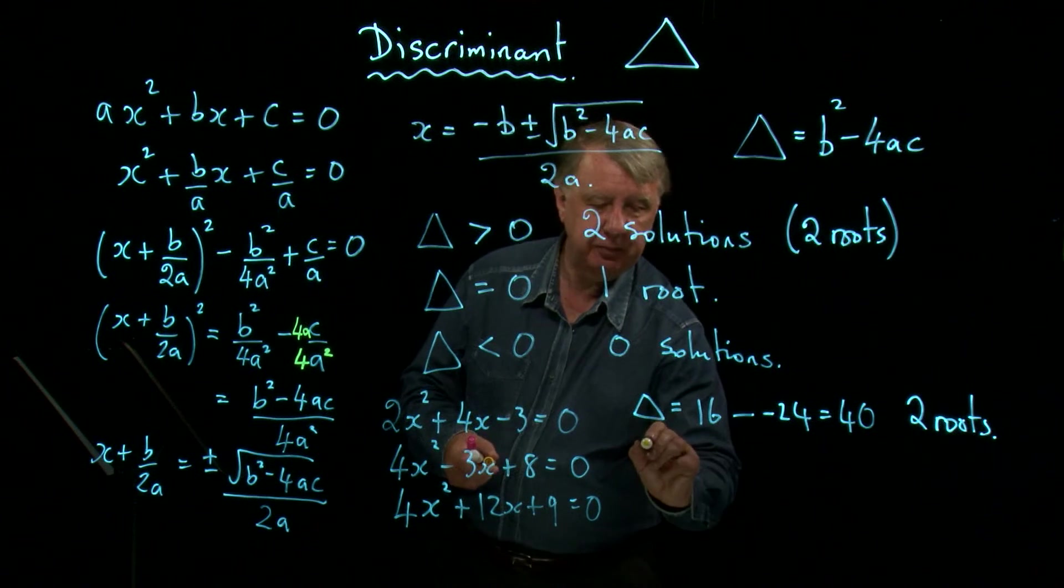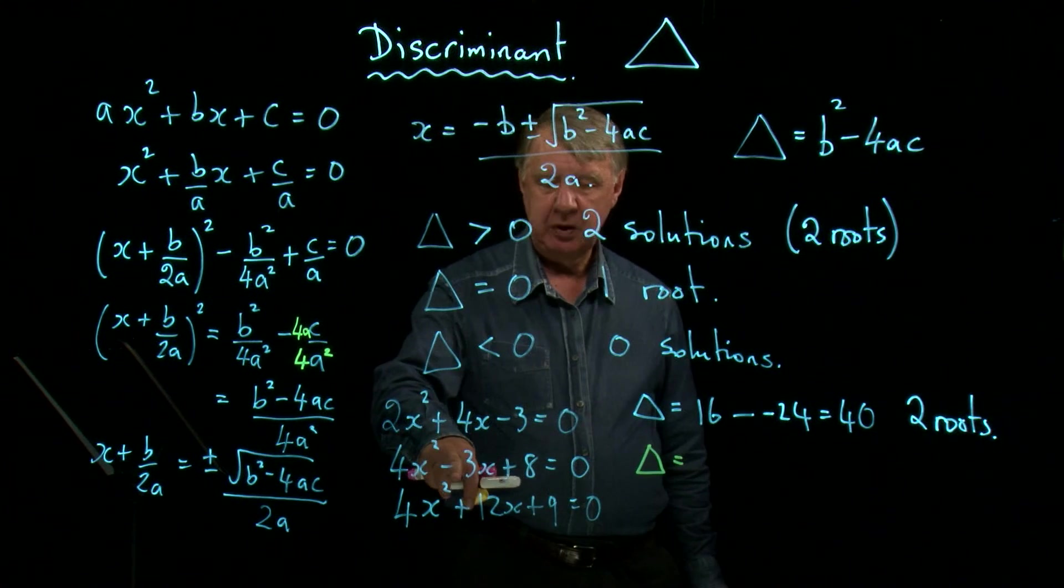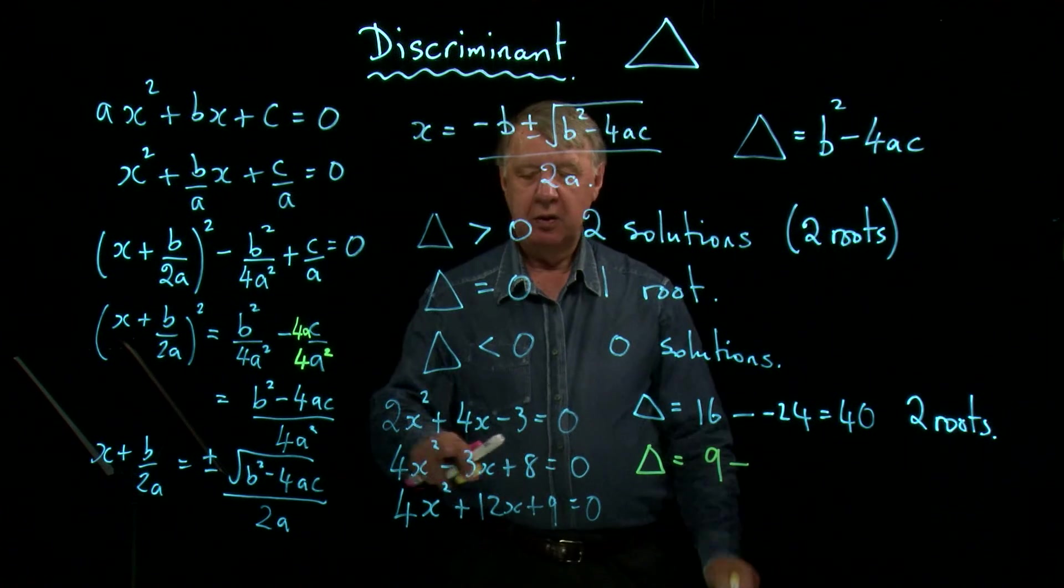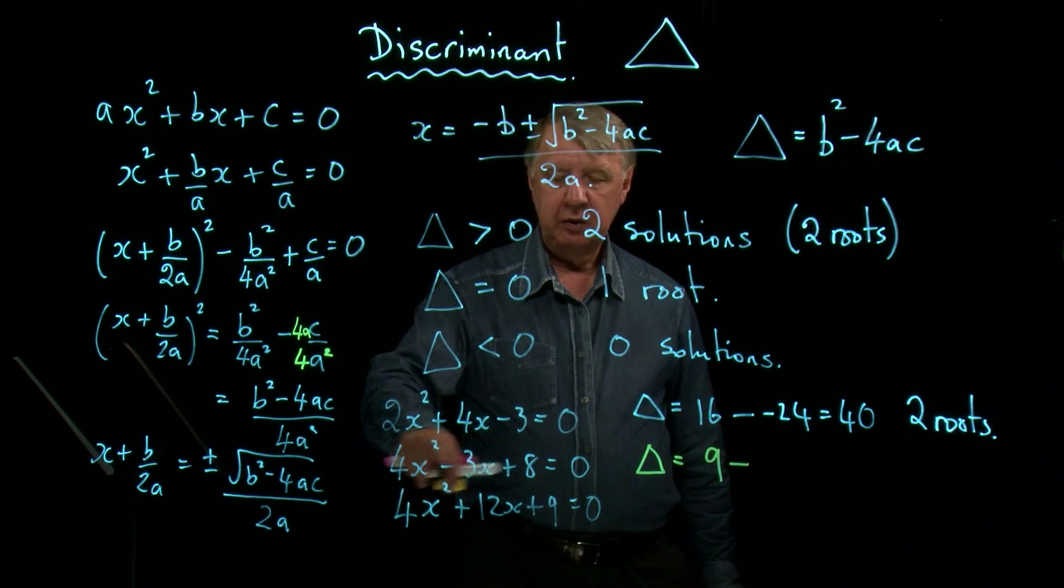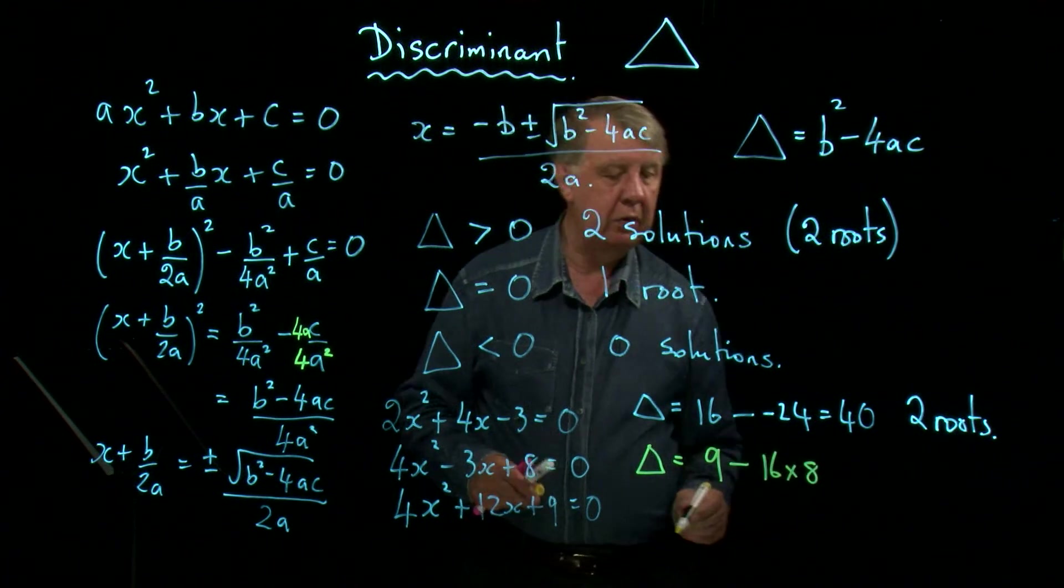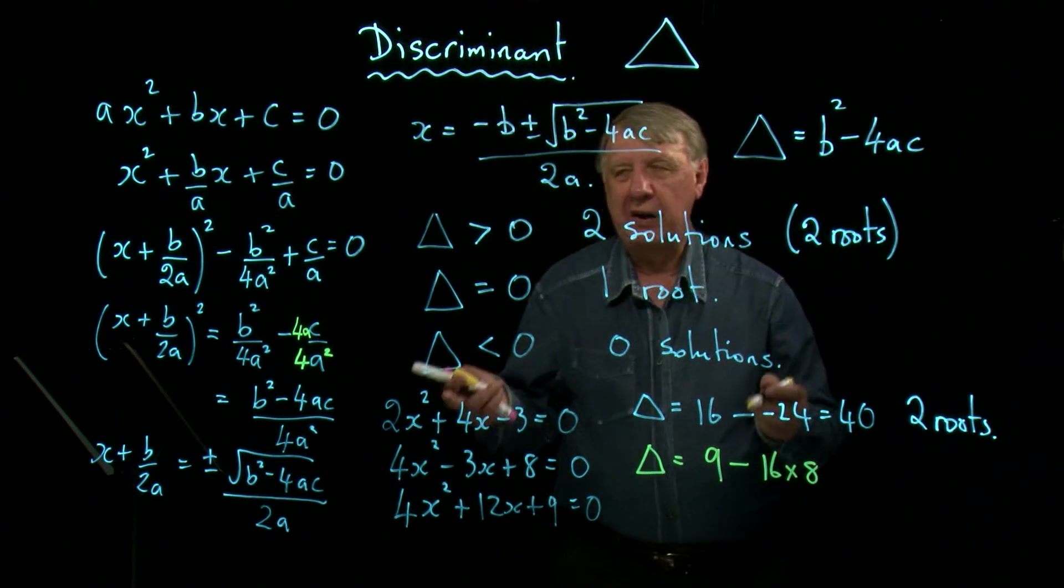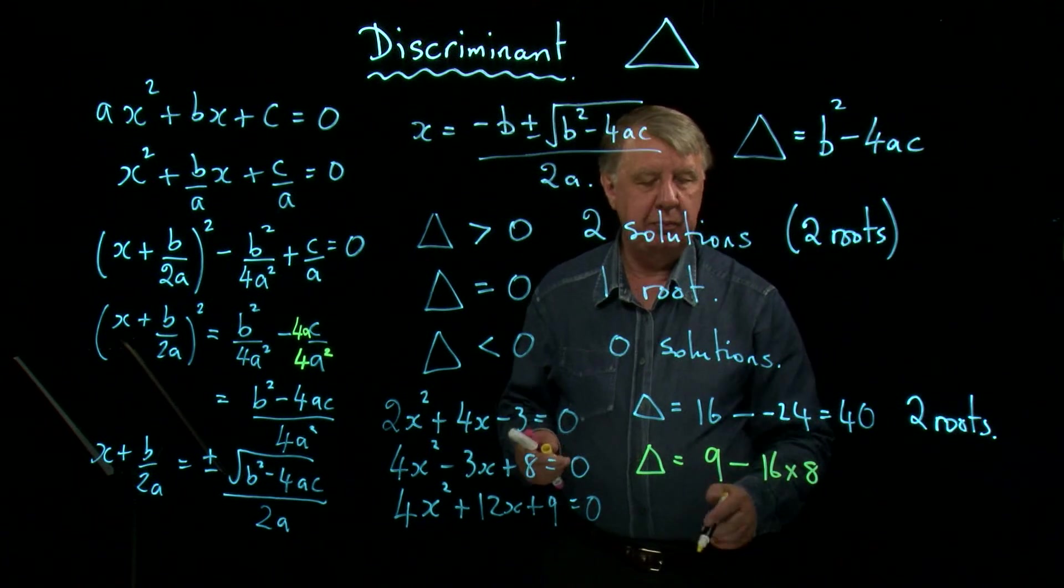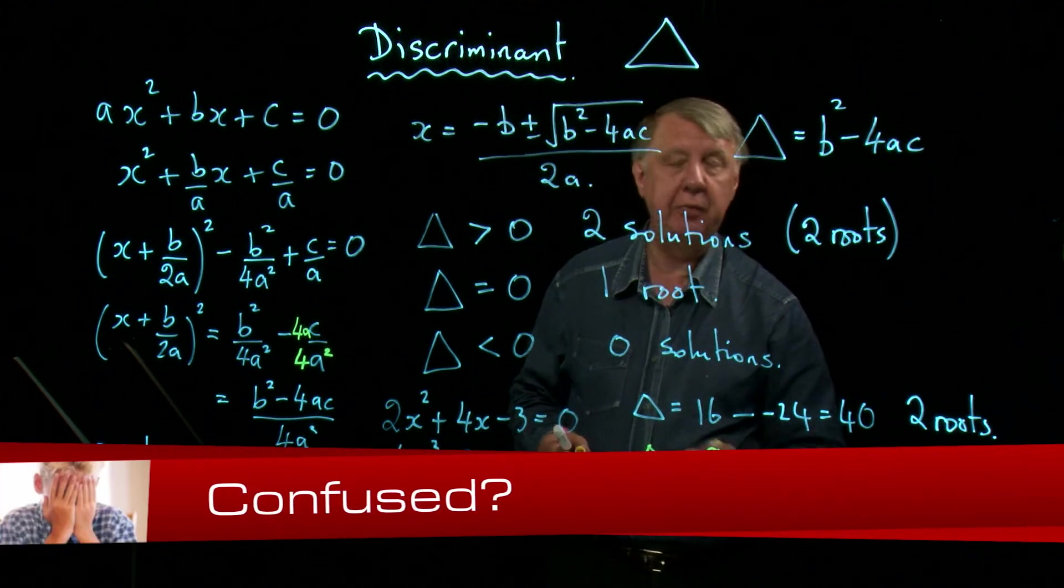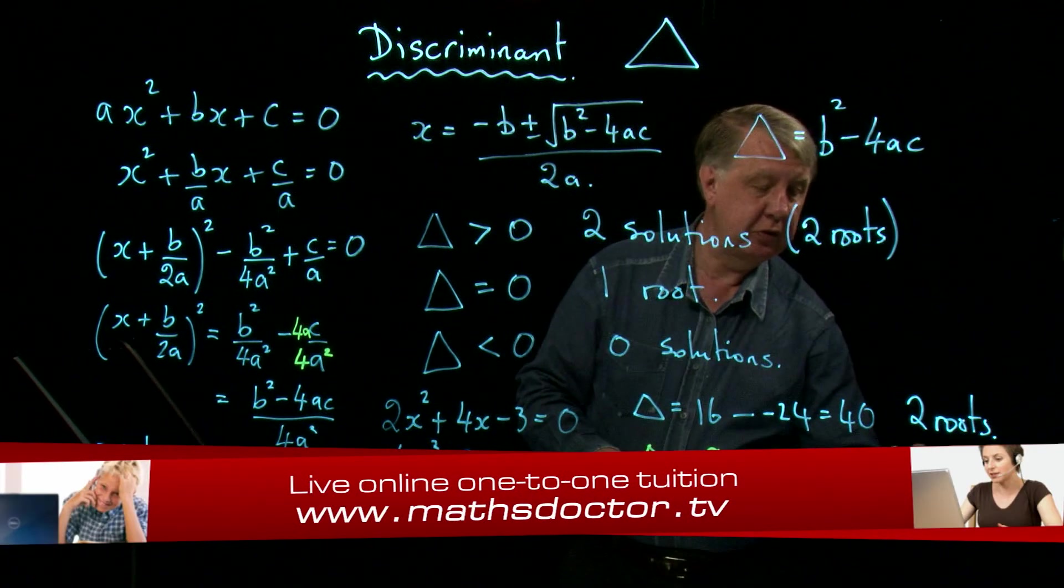Now let's try the next one. Delta for this one. b squared. b is negative 3. Negative 3 squared is 9. Take away 4a is 16. 16 times 8. We don't even need to work that out, do we? Non-calculator exam, you might be a bit stuck for time. That's clearly much larger than 9. That's clearly going to be negative. And if it's negative, there are no solutions. No roots.